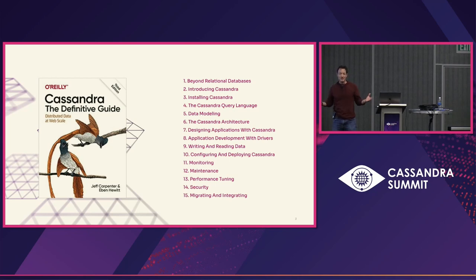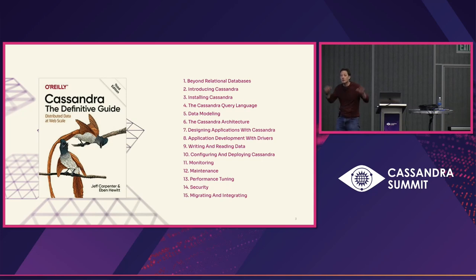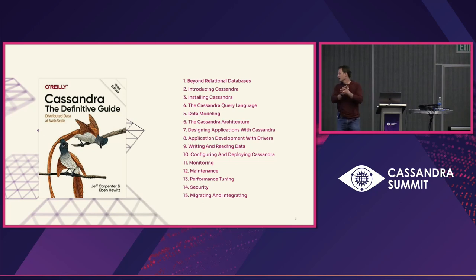I work at DataStax, which is a company that for the past several years has been building a cloud service. And we're basically trying to invalidate large portions of this book. A coworker mentioned to me recently that there was a part of the book they would like to obsolete. I thought they were talking about the whole second half of the book where we talk about operations, because we're building Astra. But he said, no, I hate the data modeling chapter.